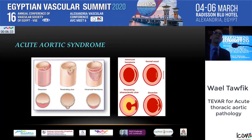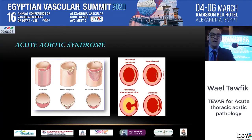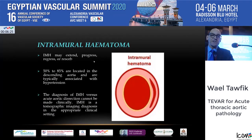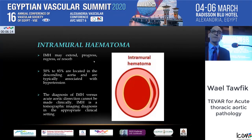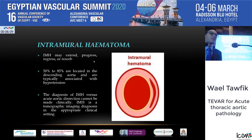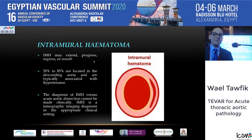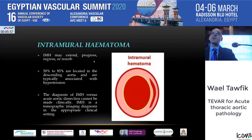Acute aortic syndrome is basically the family of intramural hematoma, penetrating ulcers, and dissections. Intramural hematoma, when it occurs due to damage to the vasa vasorum, can regress or resorb, but has a high potential to extend and progress into a dissection. The majority are located in the descending aorta and are typically associated with hypertension, though some do progress to a dissection up into the arch.